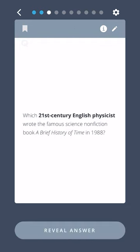Which 21st century English physicist wrote the famous science non-fiction book A Brief History of Time in 1988? Stephen Hawking.